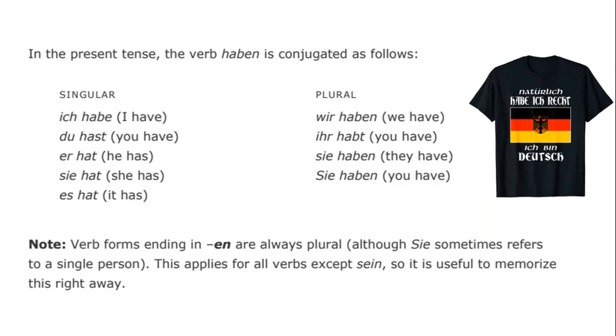We'll consider now the present tense conjugations of the verb 'haben': 'ich habe,' 'du hast,' 'er hat,' 'wir haben,' 'ihr habt,' 'sie haben,' etc.